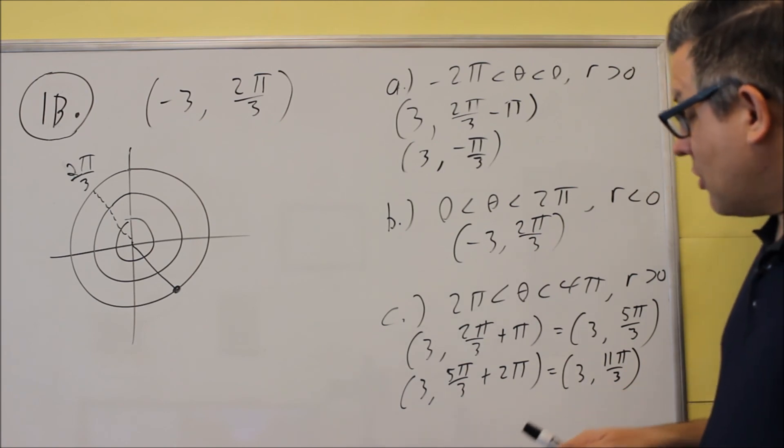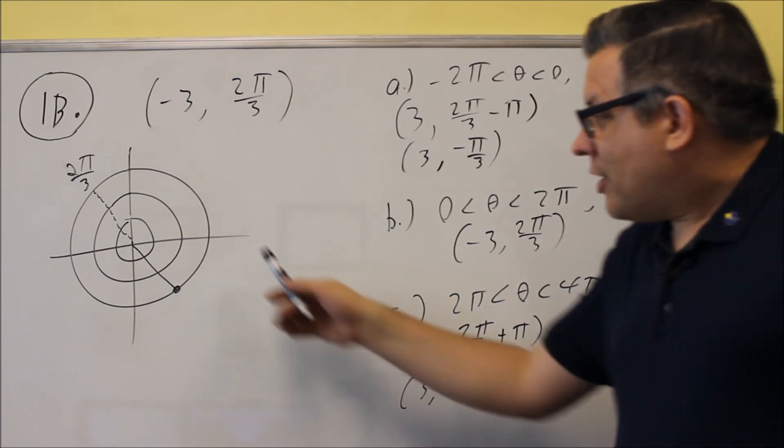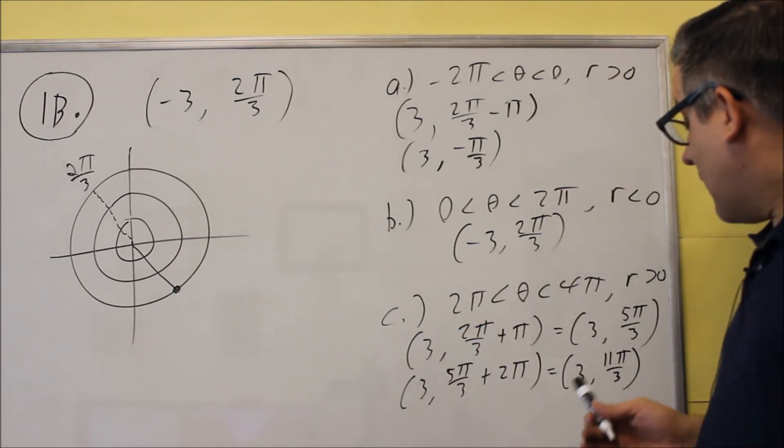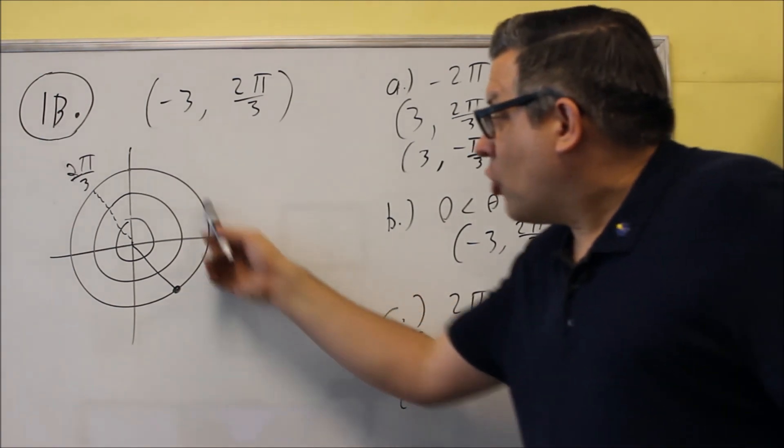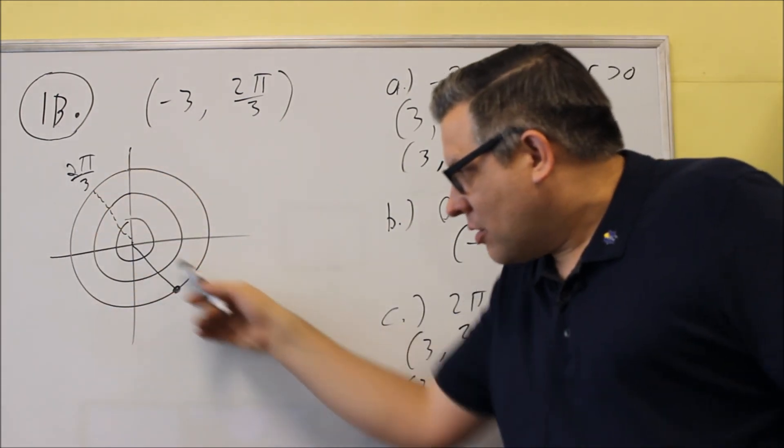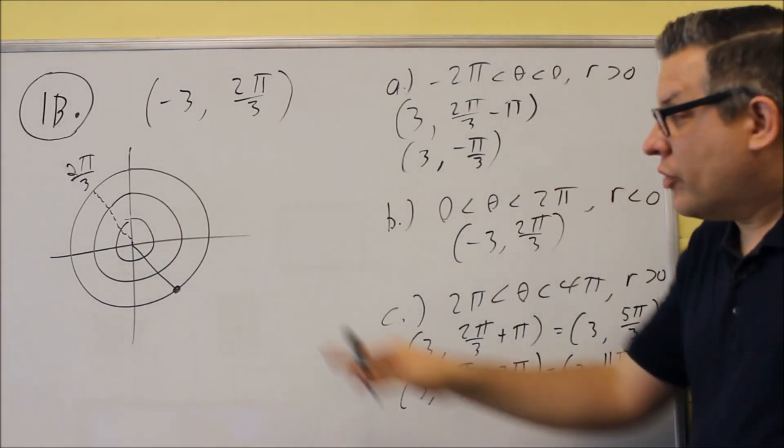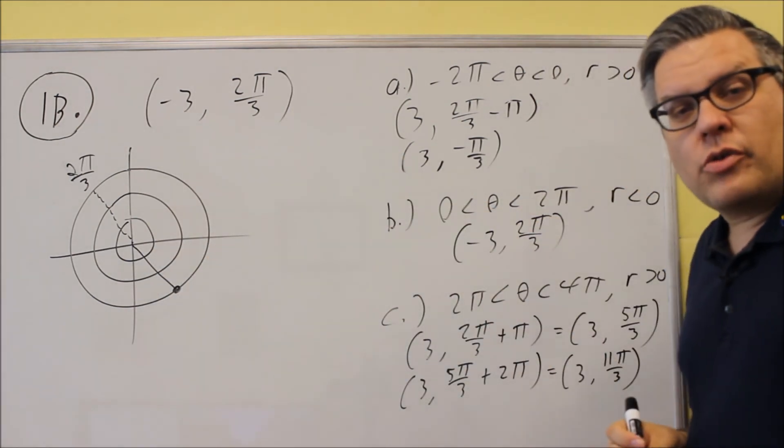As far as graphing it, what you would do is, essentially what you're doing is, you're going around, you go around once, then you go around again, 5π over 3, that takes you to here, and then it's 3, so you can just count directly to that one. So all three of our points are equivalent to the original point that we were given.